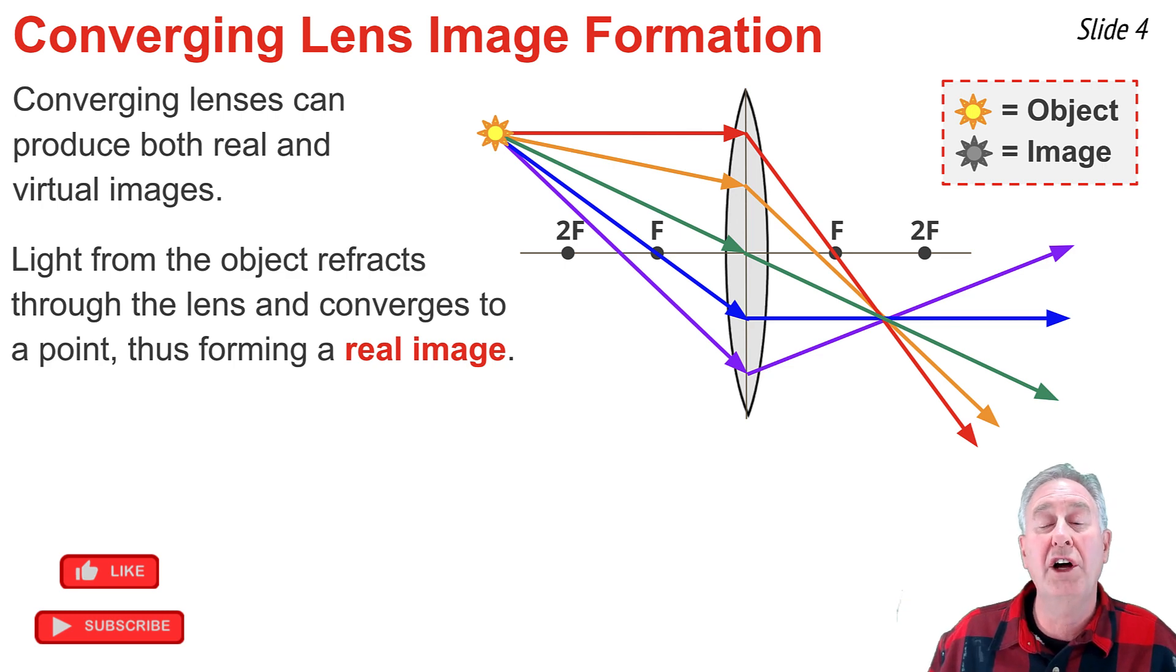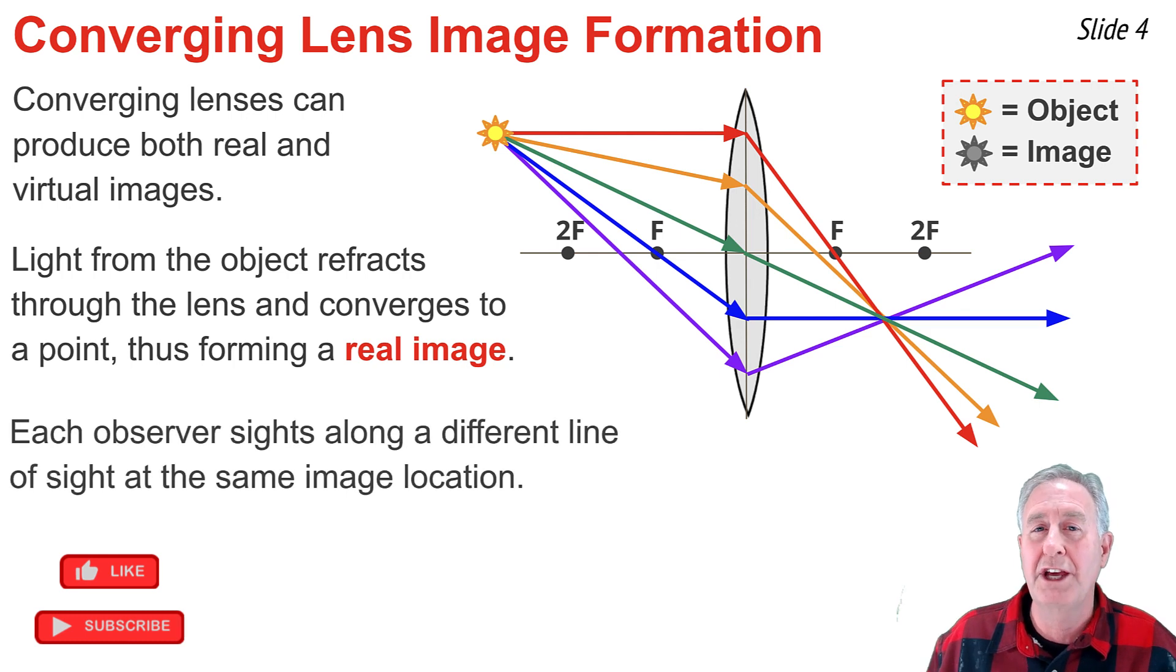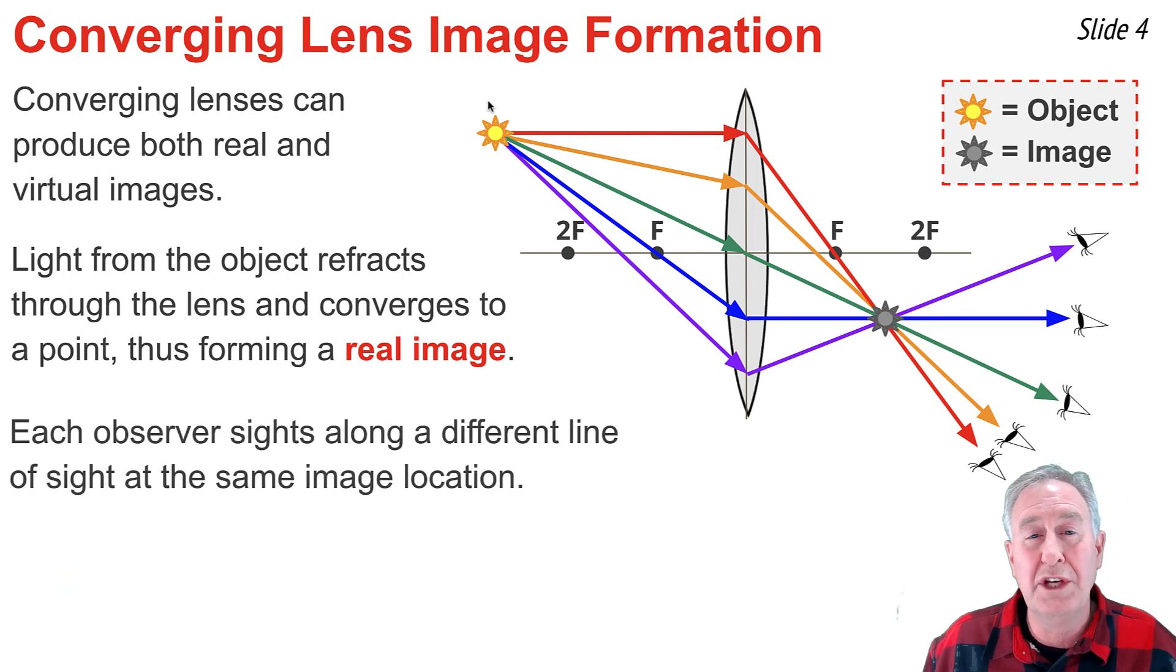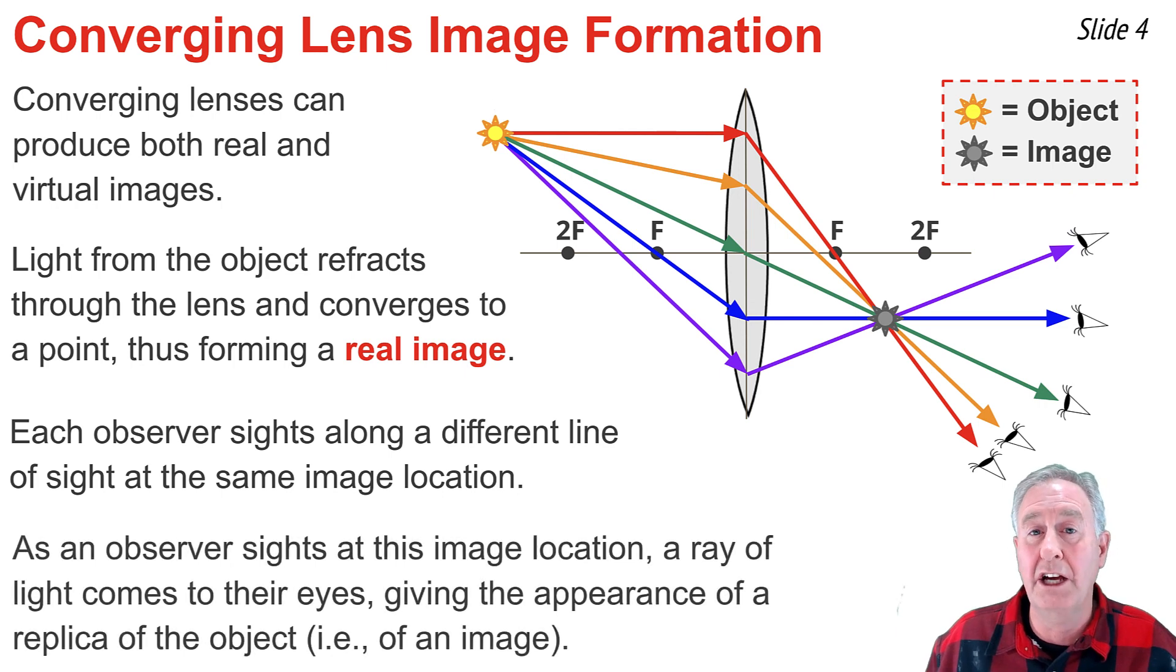Each observer will sight along a different line of sight defined by one of these refracted rays, but at the same image location. And when they do sight along this line of sight, light comes from that image location along the line of sight to the observer's eye, giving the appearance of a replica or representation of the object, that is, giving the appearance of an image.